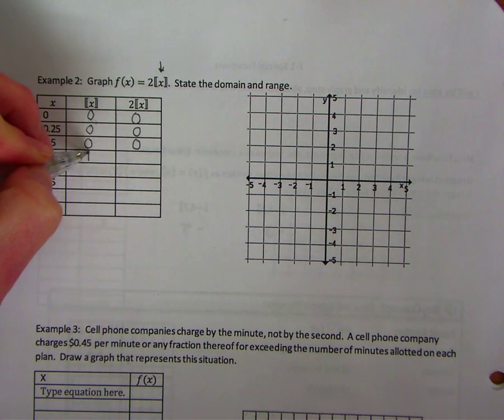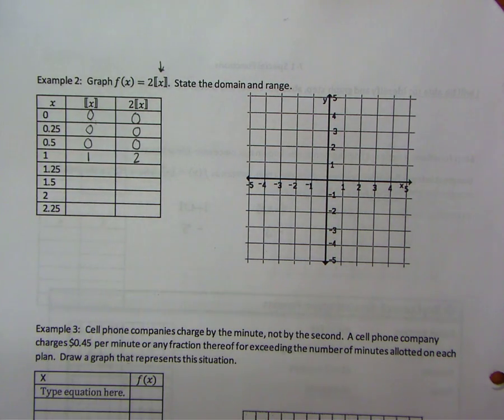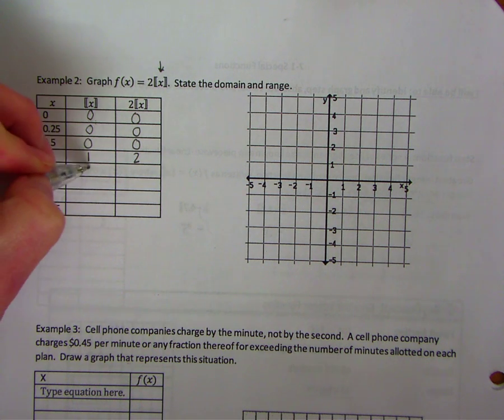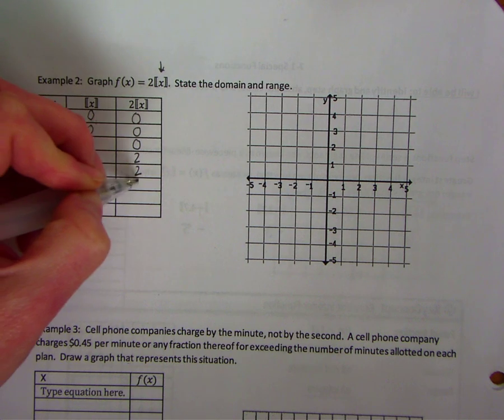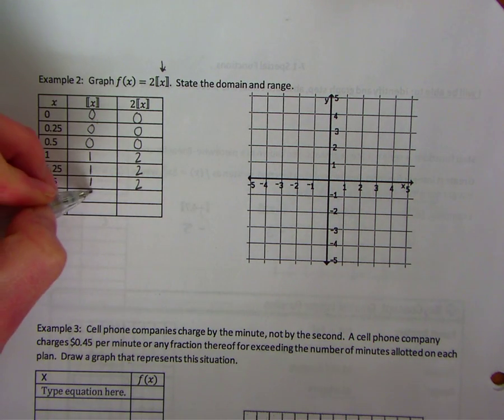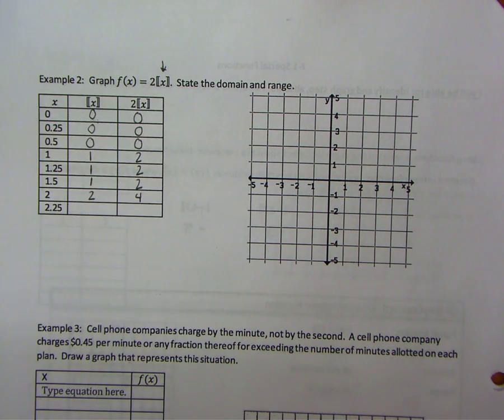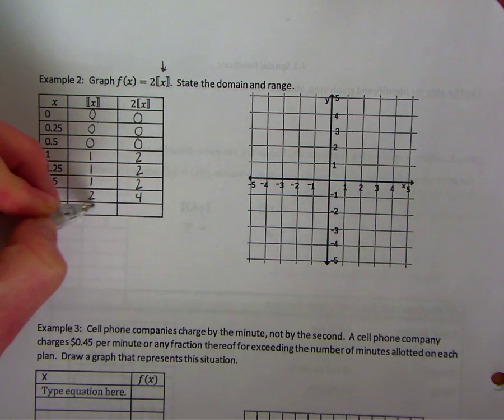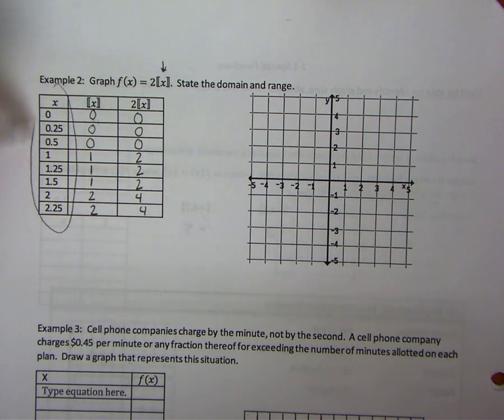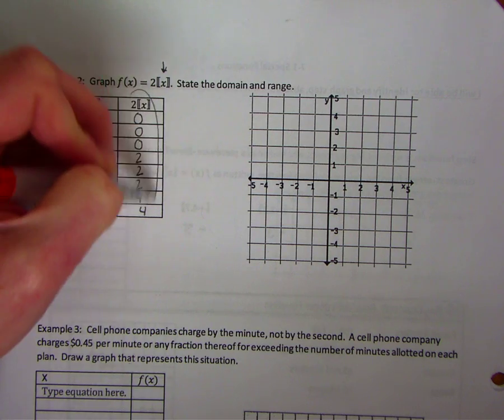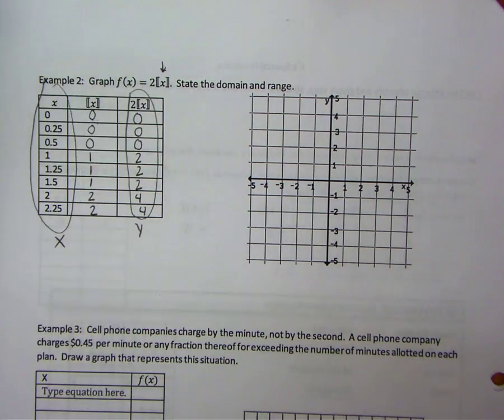1 would round to 1 and then be 2. 1.25 would round down to 1 and then times 2. 1.5 would round down to 1 times 2. 2 would round to 2 times 2 is 4. 2.25 rounds to 2 times 2 is 4. So now again we're going to use these as my x values and these as my y or f of x values.